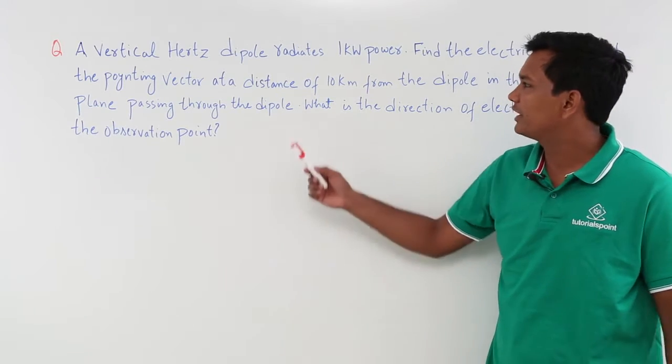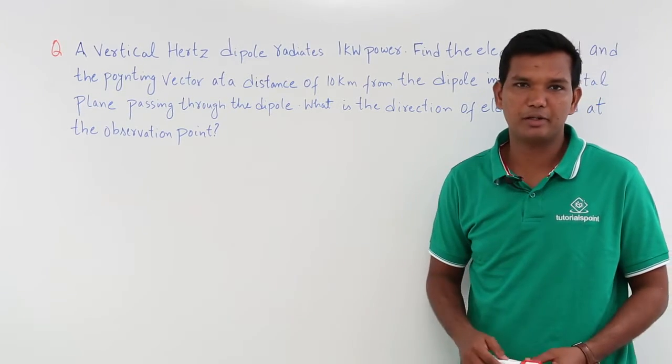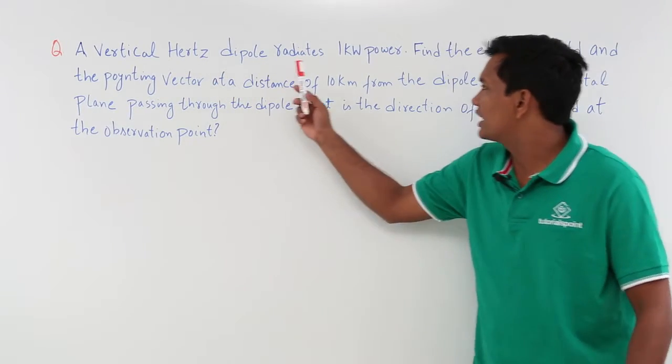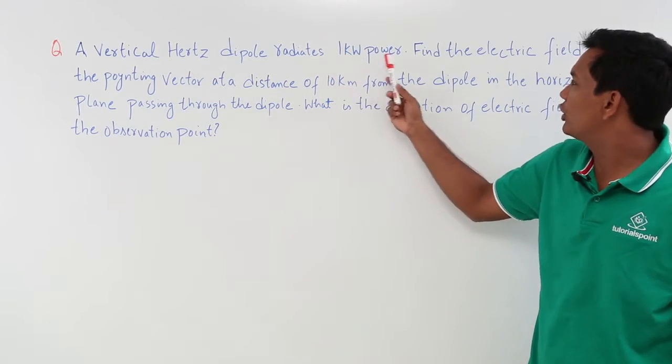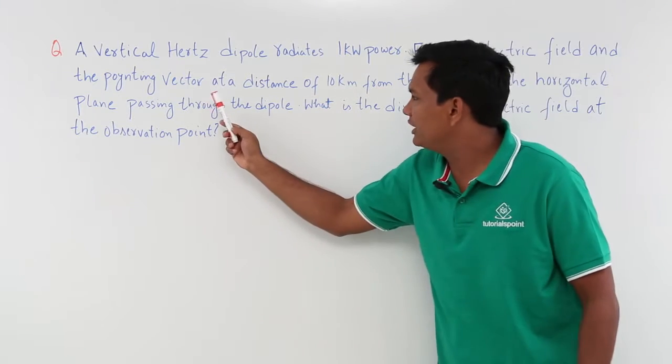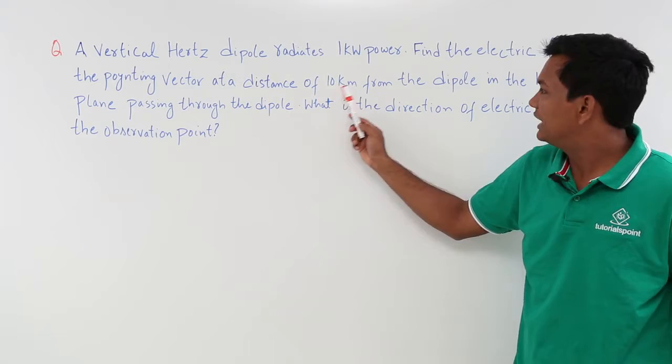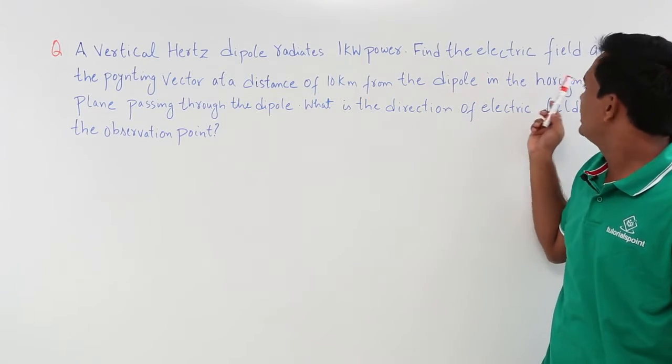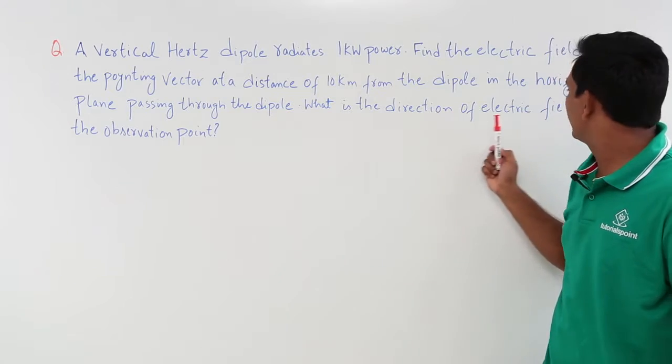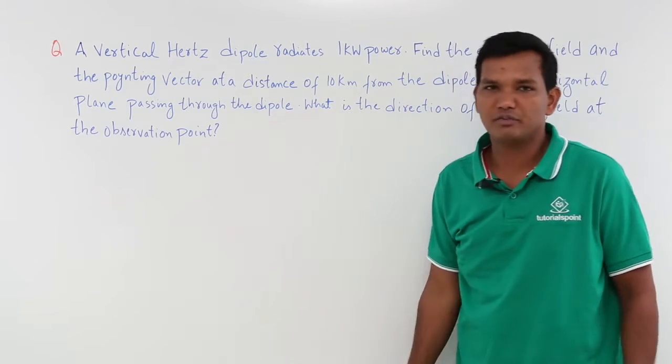In this class we will try to solve another problem on Hertz dipole. Let us see what is given in the problem. A vertical Hertz dipole radiates 1 kilowatt power. Find the electric field and the pointing vector at a distance of 10 kilometer from the dipole in the horizontal plane passing through the dipole. What is the direction of electric field at the observation point?